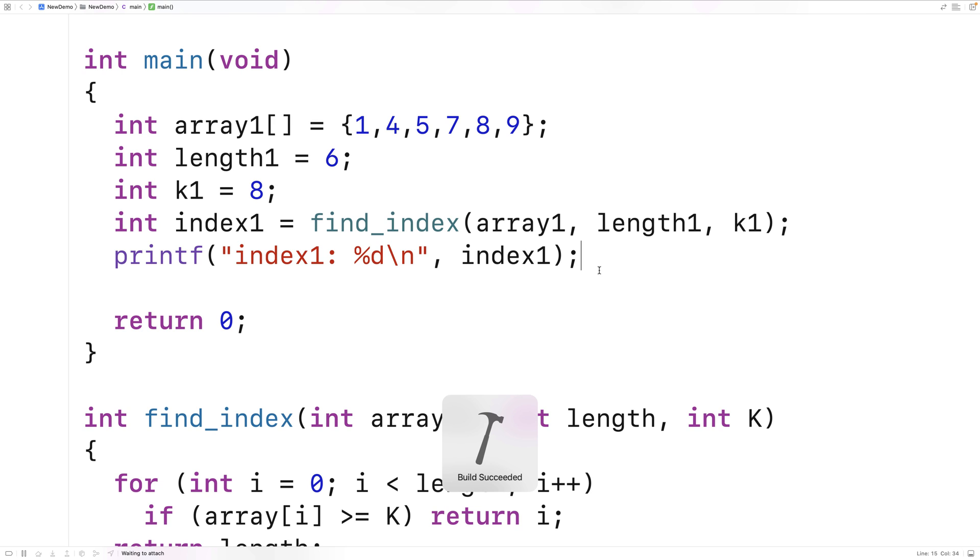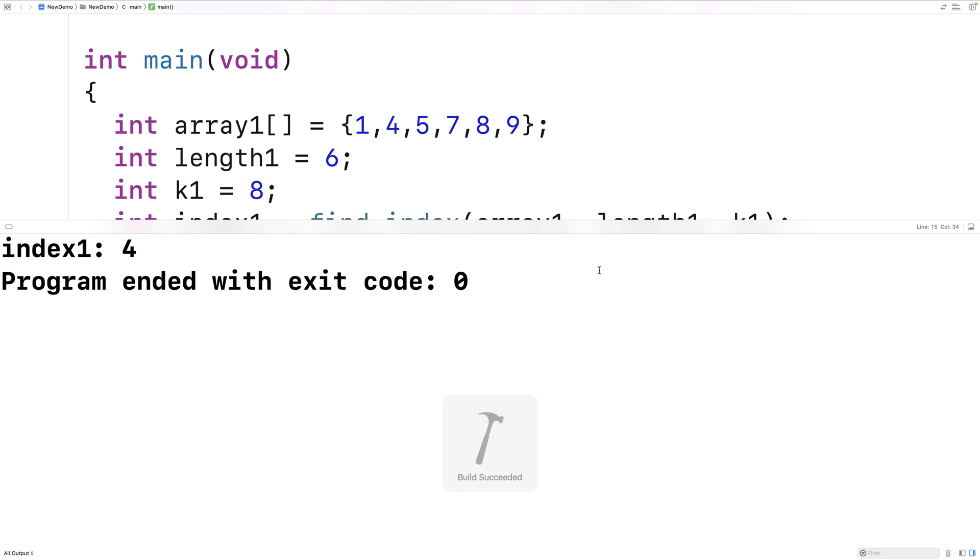So let's save this and run it. And we do get that 8 is at index 4. So the K value of 8 returns us index 4.